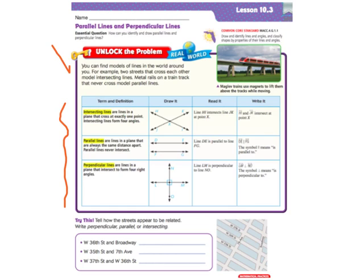It says you can find models of lines in the world around you. For example, two streets that cross each other model intersecting lines. You might have heard your parents say, 'I have to go through this intersection.' So whenever two streets cross, that's an intersecting line. Metal rails on a train track that never cross model parallel lines.